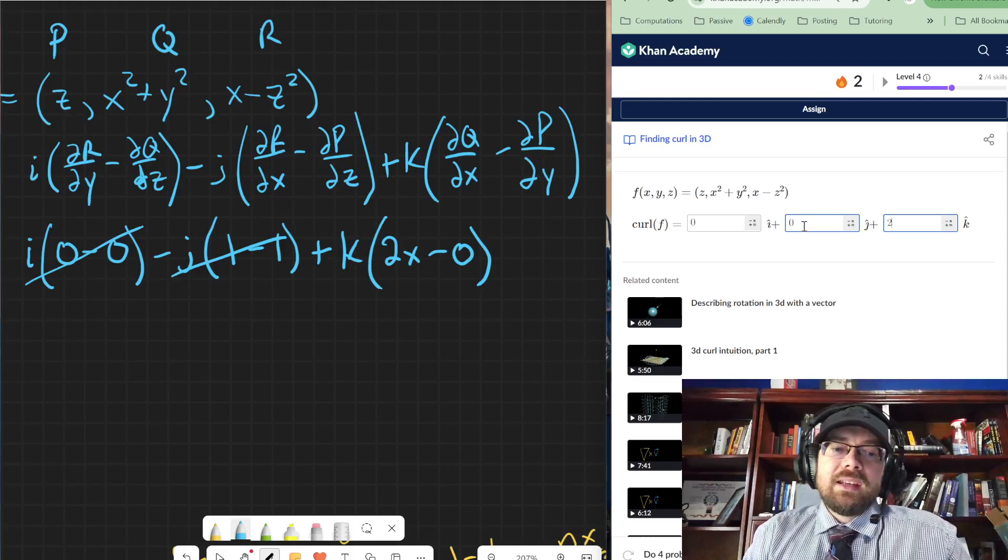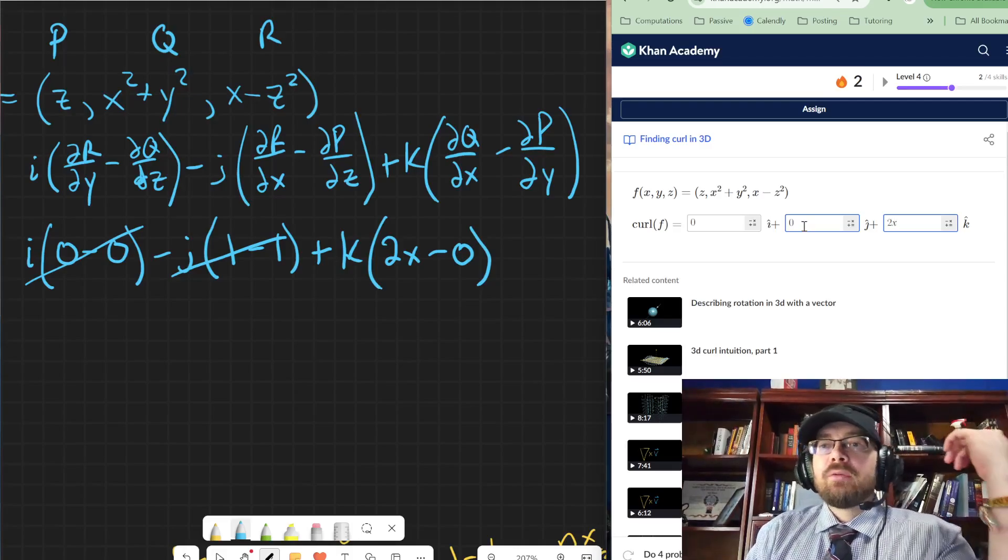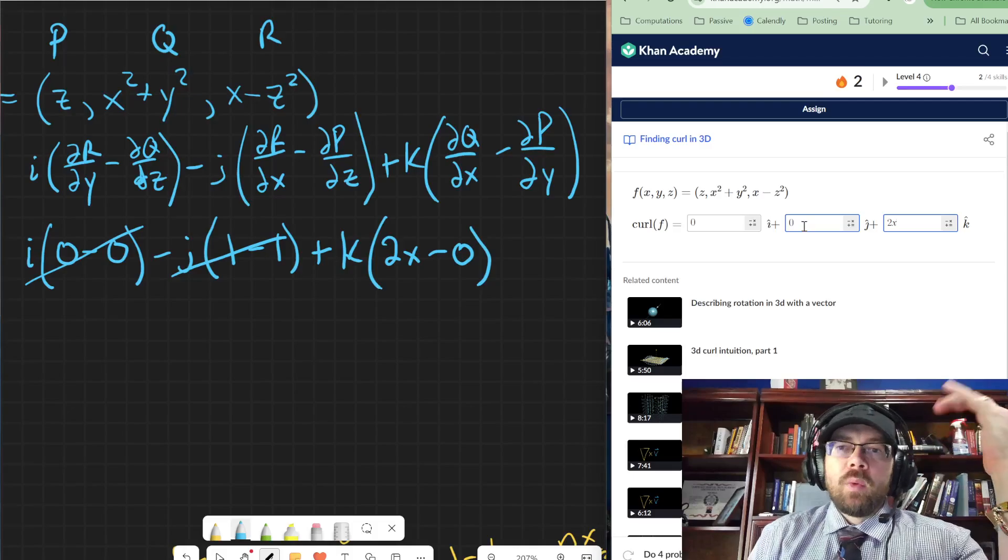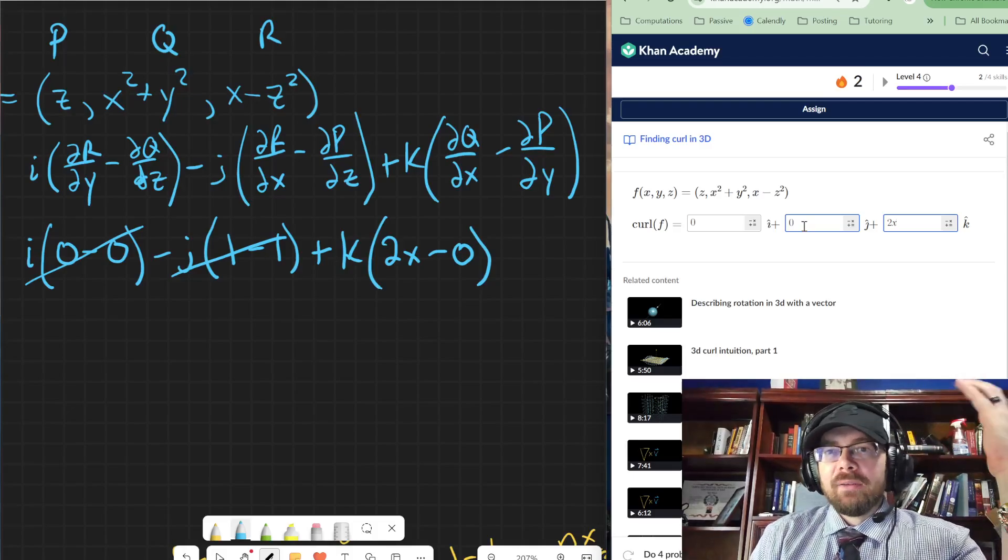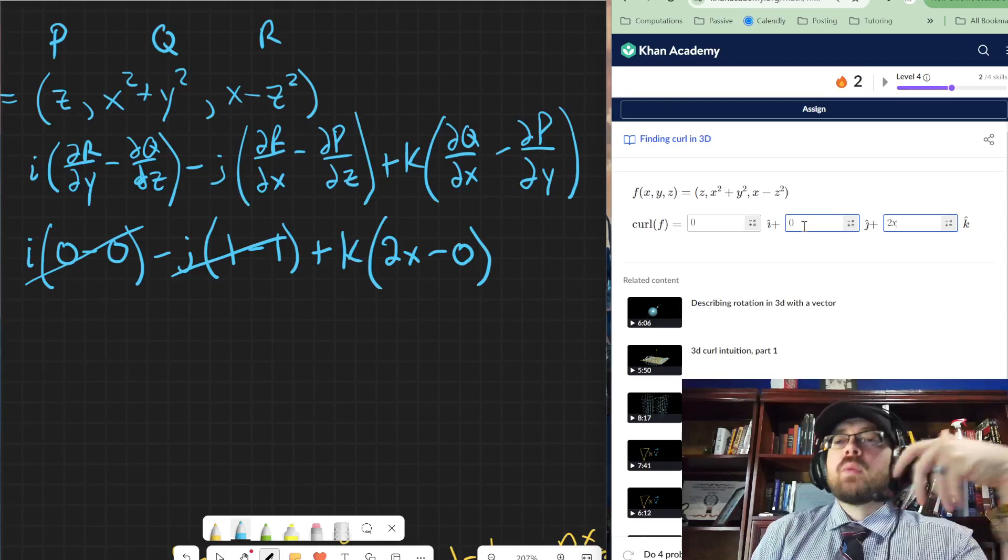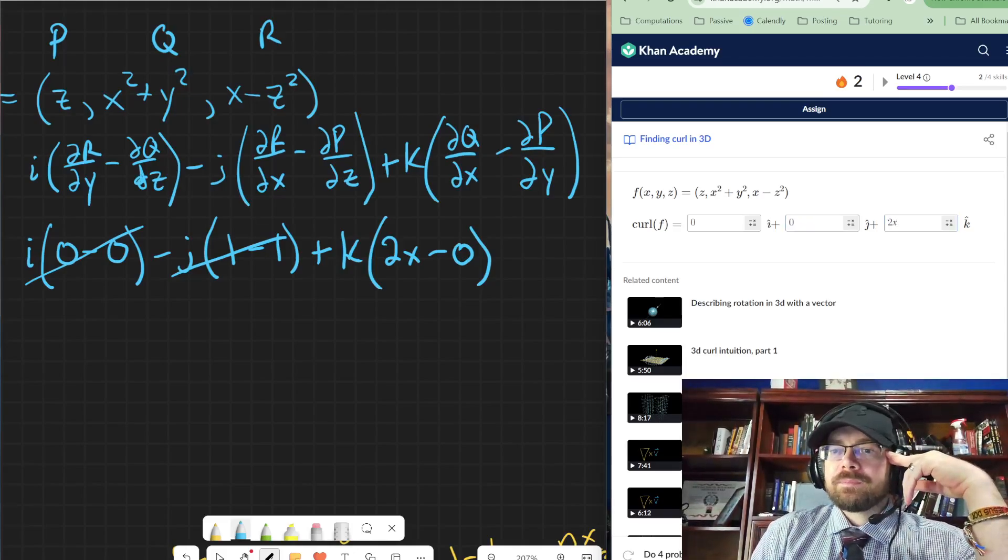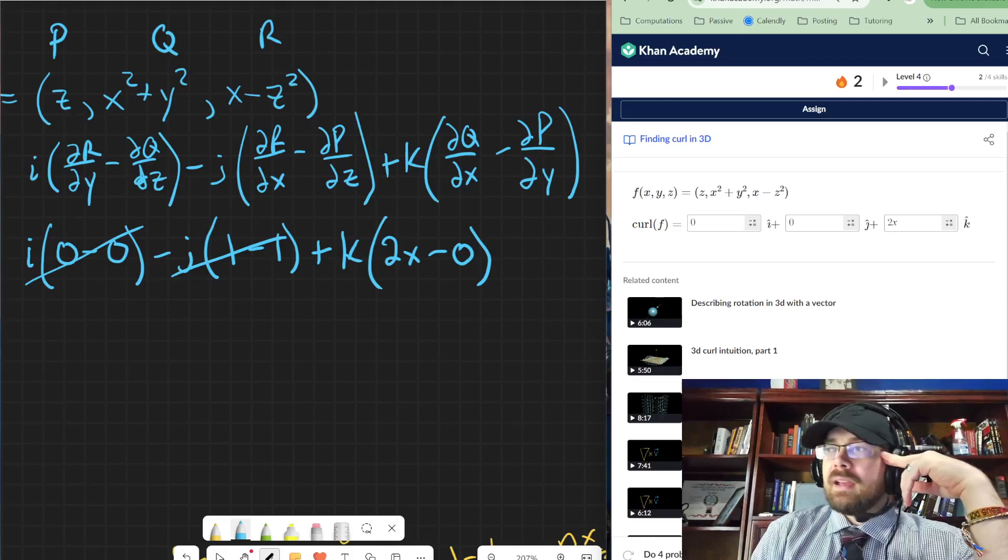Now, they're not asking for the curl of f at a specific point. So we would leave it alone if they told us what's the curl of the function f at the point like one, one, one, or two, three, five, or whatever. Then we would plug in numbers, and then we would have a specific thing. But we'll go ahead and check that.